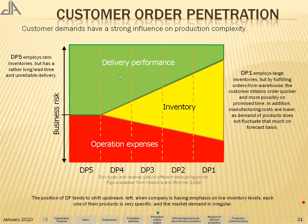On the other side of the chart, DP1 employs large inventory. By fulfilling orders from the warehouse, the customer obtains orders quicker with more reliability on promised delivery time. In addition, manufacturing costs are lower as demand does not fluctuate as much. In this case, operating expense is at a minimum, inventory is at a maximum, and delivery performance lead time is very short.